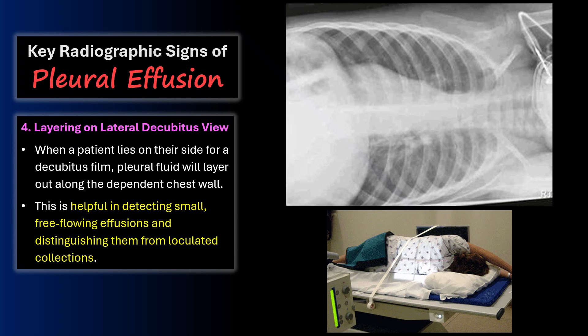Fourth, you may see layering on a lateral decubitus view. When a patient lies on their side for a decubitus film, pleural fluid will layer out along the dependent chest wall. This is helpful in detecting small free-flowing effusions and distinguishing them from loculated collections.